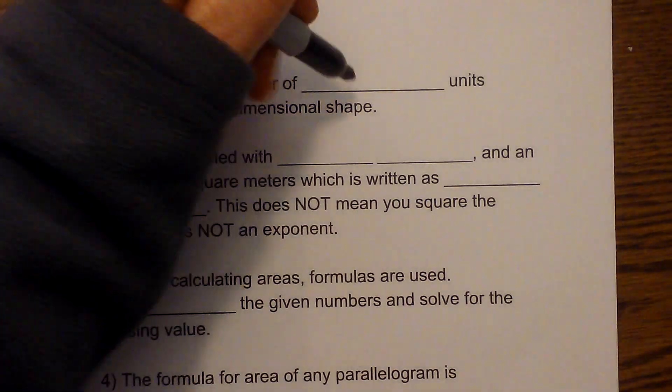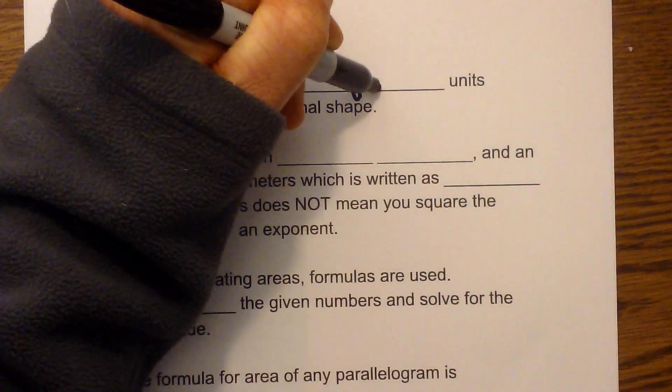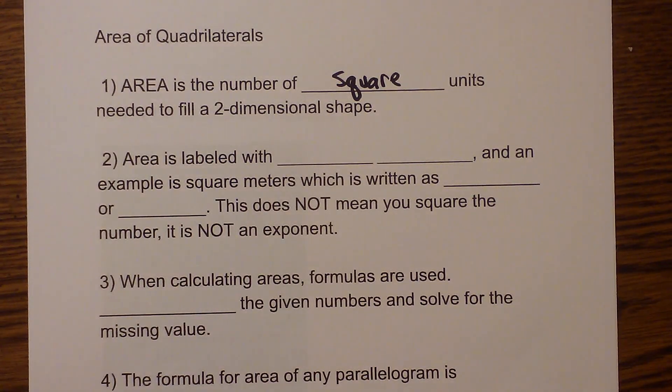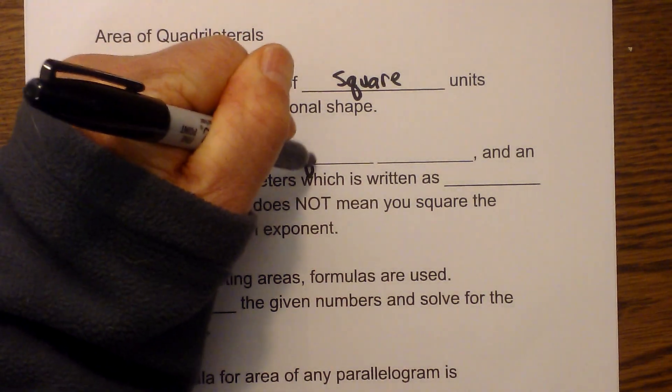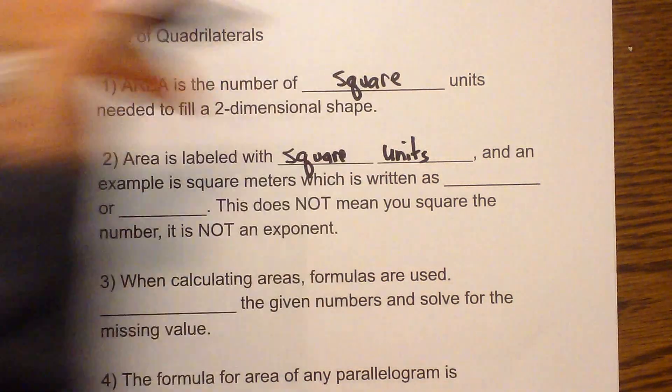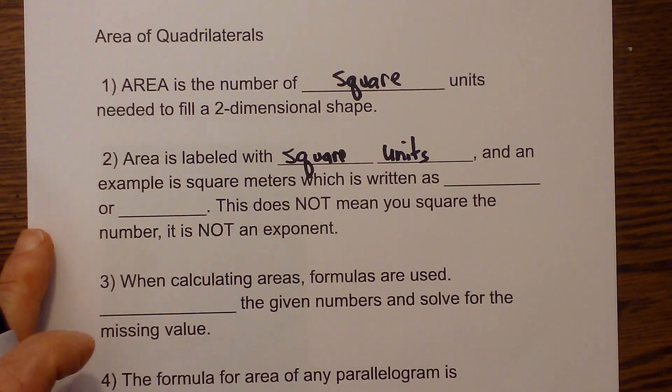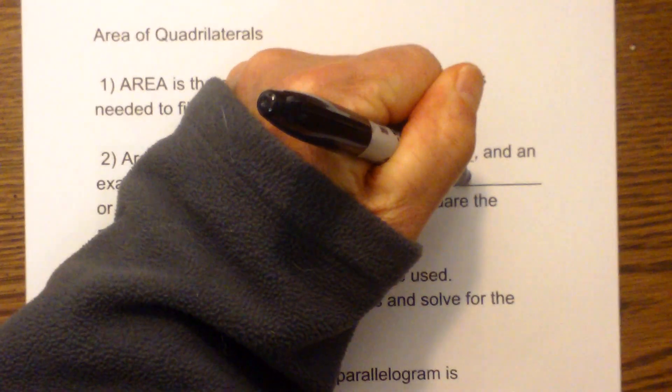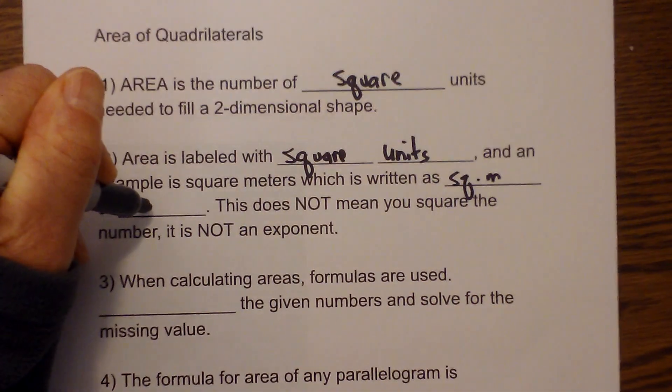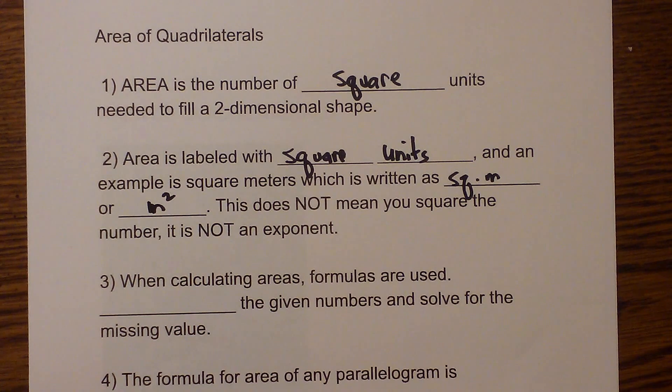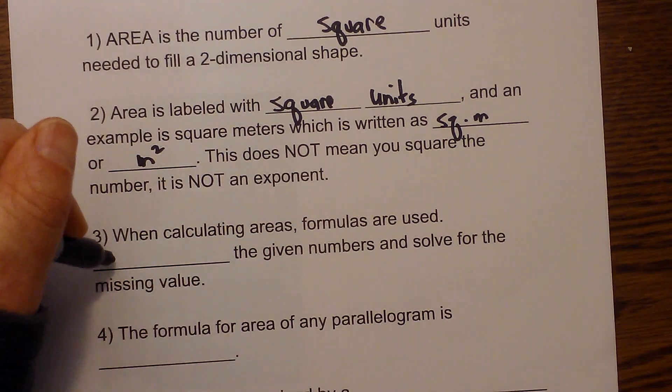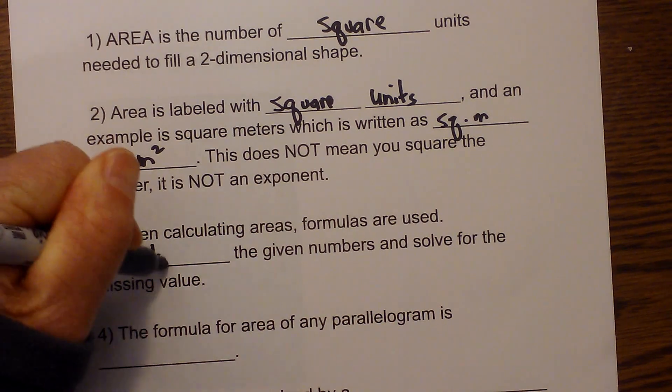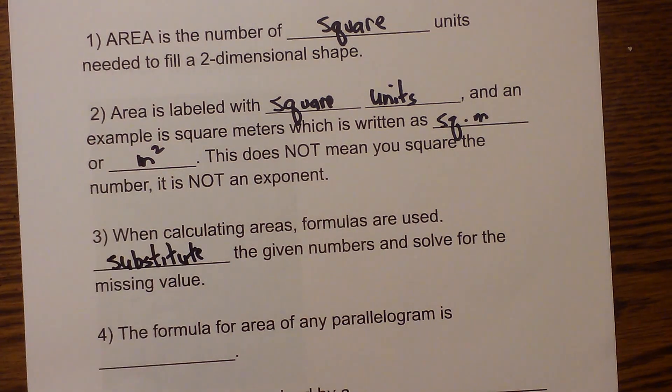Area is the number of square units needed to fill a two-dimensional shape. Area is labeled with square units. An example is square meters which is written as either square meters or meters squared. This does not mean that you square the number; it is not an exponent. When calculating area, formulas are used to substitute the given numbers and solve for the missing value.